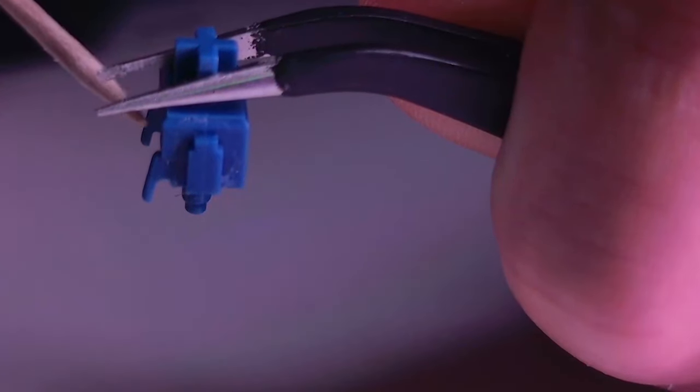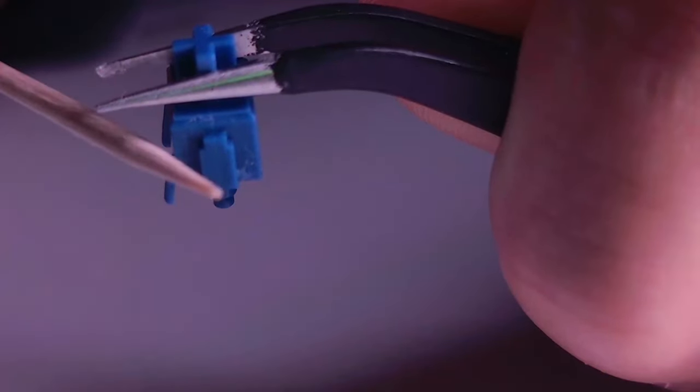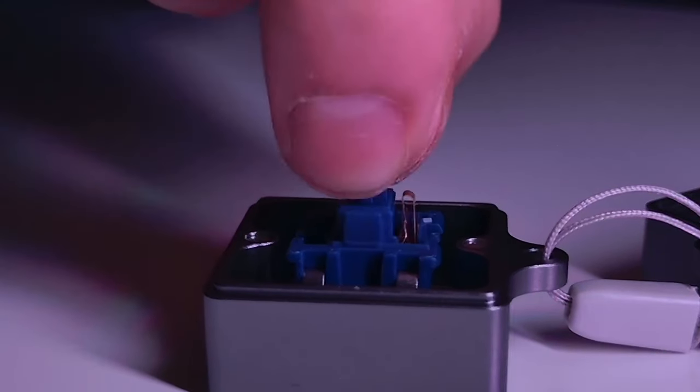But let's zoom in and check the stem. The stem of the linear switch has no bumps on the surface which comes in contact with the leaf. It gives a smooth key press with no tactile feedback.